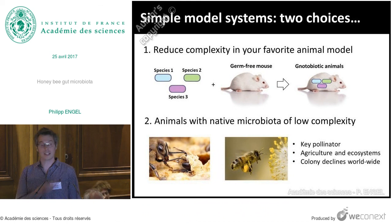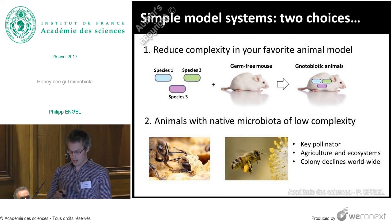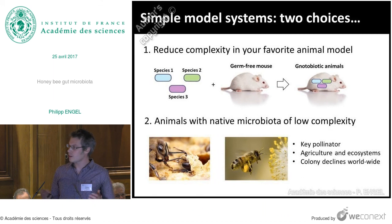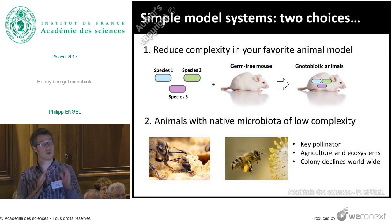The other approach is to actually look at an animal which has evolved to harbor a native microbiota of low complexity. This is actually why we study the honeybees. The honeybee, in my opinion, is not only a great model, but it's also an important animal because it's a key pollinator for agriculture as well as natural ecosystems. In the last few years and decades, we have experienced massive colony declines worldwide, and we're only starting to appreciate that the gut microbiota must have an important impact on the health of this pollinator species.